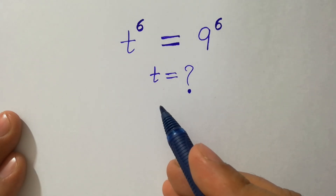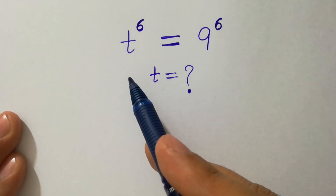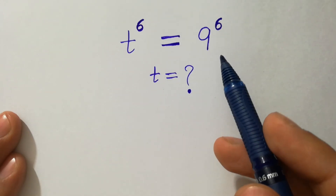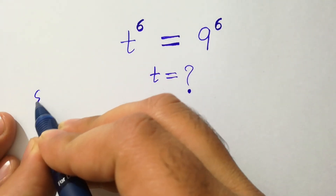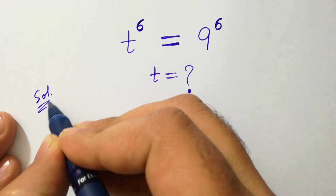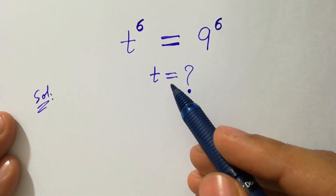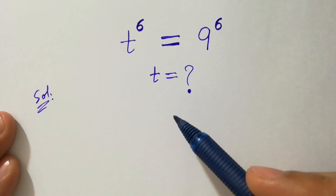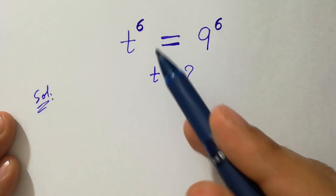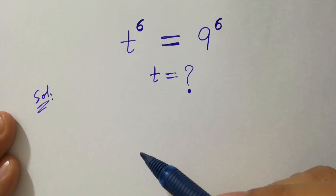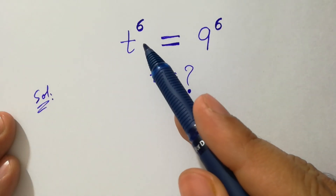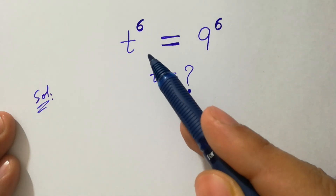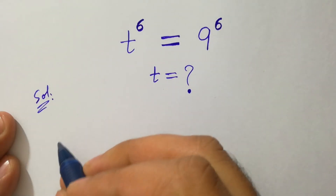Hello friends. Find the value of t if t to the power 6 equals 9 to the power 6. Let's have a solution. You can see this problem is a 6th degree equation — it has a highest power of 6. Must remember that if you have a 6th degree equation, it always gives 6 different solutions. Let's start.